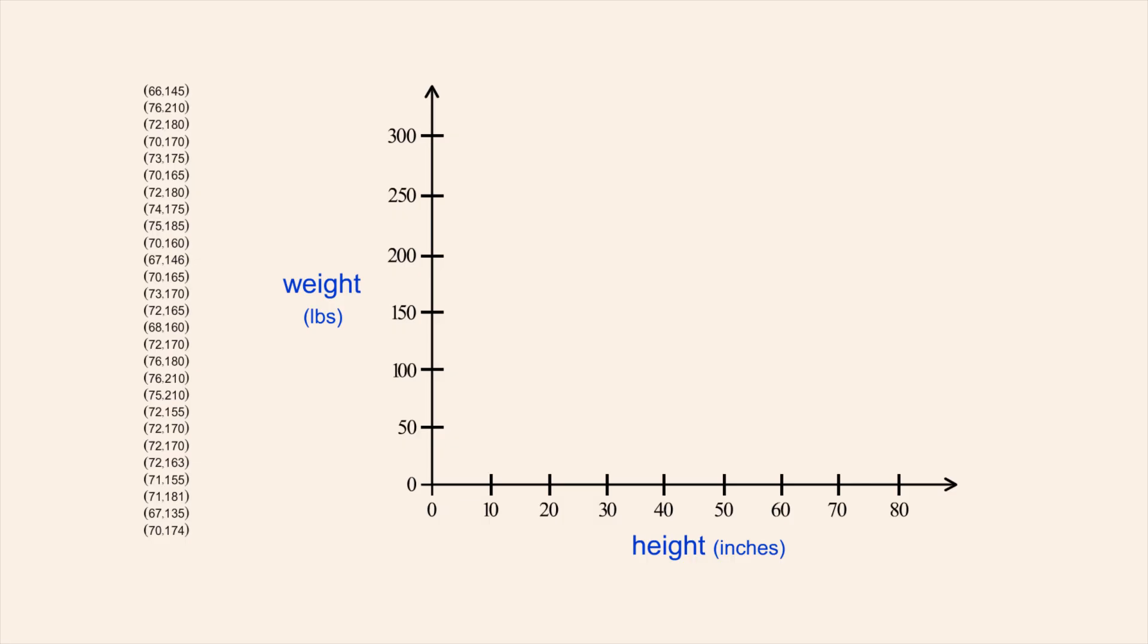Now, starting with the first ordered pair, we locate the value of the first coordinate on the horizontal axis and the second coordinate on the vertical axis. So the point corresponding to the height and weight of the first soccer player is located at this horizontal and vertical position.